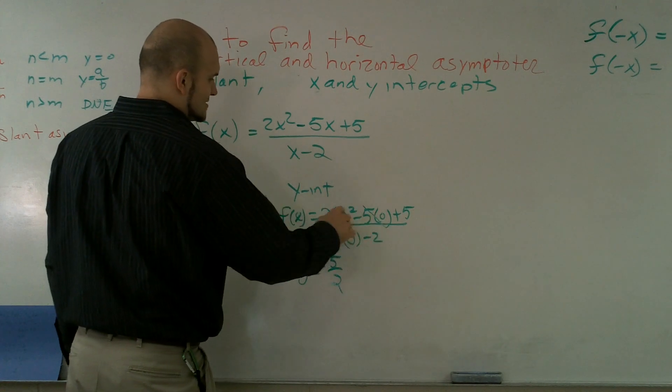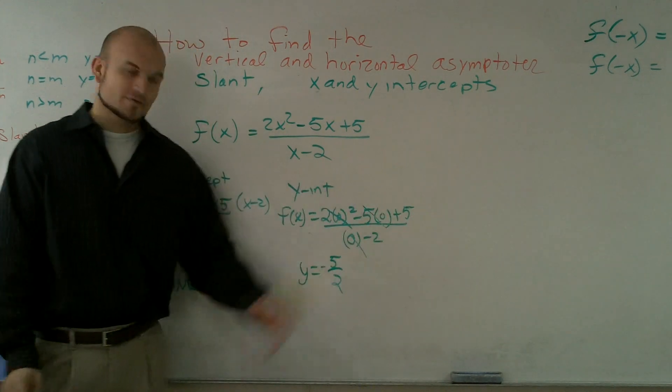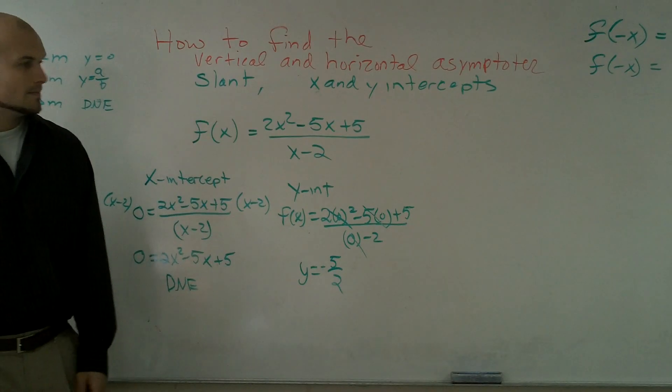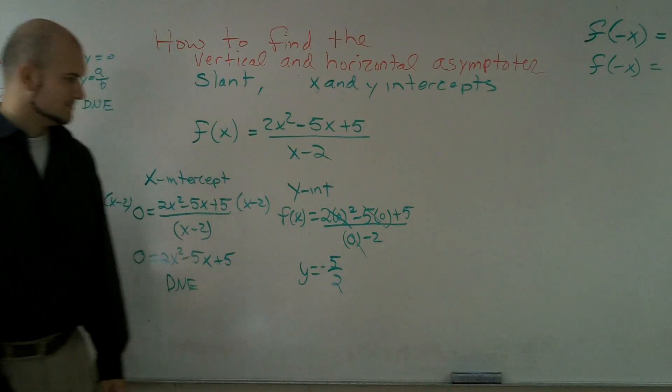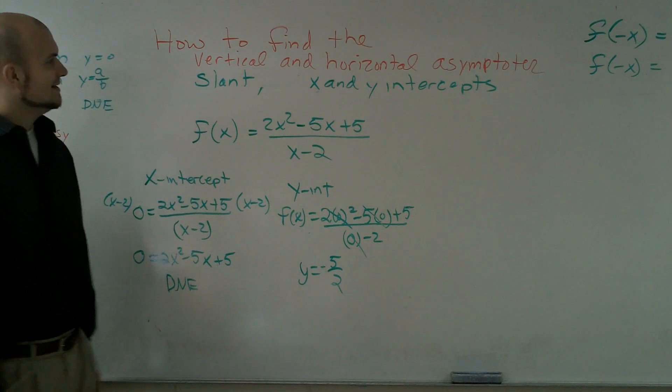Because that cancels out, you're just left with 5 over negative 2. I'll try to be walking on the other side.